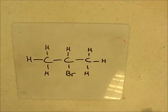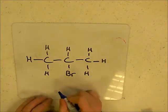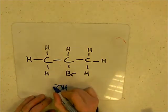So what we're going to start with is a haloalkane like this. We've got 2-bromopropane, and we're going to react it with some form of OH-.